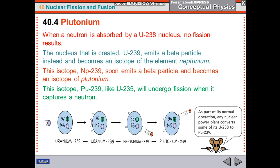When a neutron is absorbed by a uranium-238 nucleus, no fission results. The nucleus that is created, U-239, emits a beta particle instead and becomes an isotope of the element neptunium. This isotope, Np-239, soon emits a beta particle and becomes an isotope of plutonium. This isotope, Pu-239, like U-235, will undergo fission when it captures a neutron.